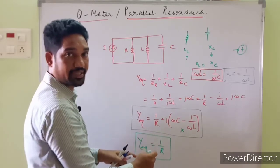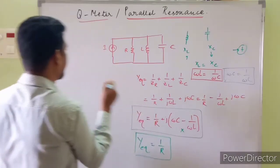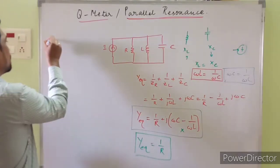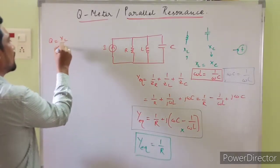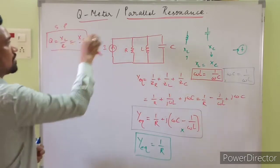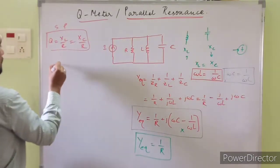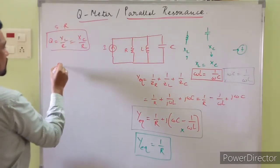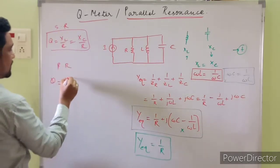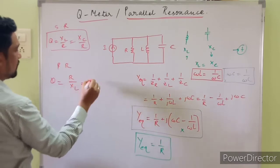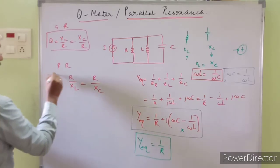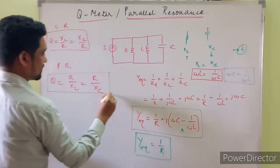On the other hand, what is the expression for quality factor? Q was previously defined for series resonance as Q = XL/R = XC/R. Now we are talking about parallel resonance, and for parallel resonance, Q will be equal to the reciprocal — in the sense Q = R/XL or R/XC. This is the expression for quality factor in a parallel RLC circuit.